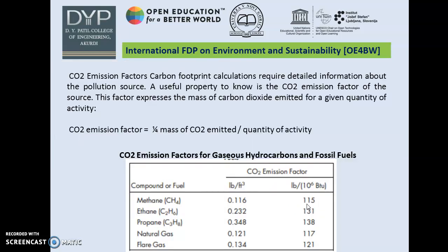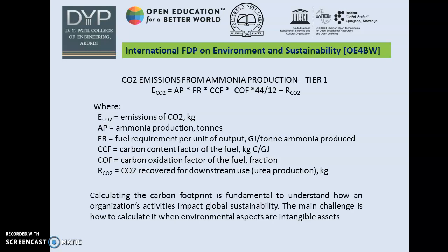The next point is the CO2 emission factor. Carbon footprint calculation requires detailed information about the pollution source. A useful property to know is the CO2 emission factor of the source, which expresses the mass of CO2 emitted for a given quantity of activity. The formula is: CO2 emission factor = (1/4) × mass of CO2 emitted / quantity of activity. A table presents CO2 emission factors for gaseous hydrocarbons and fossil fuels including methane, ethane, propane, natural gas and flare gas.